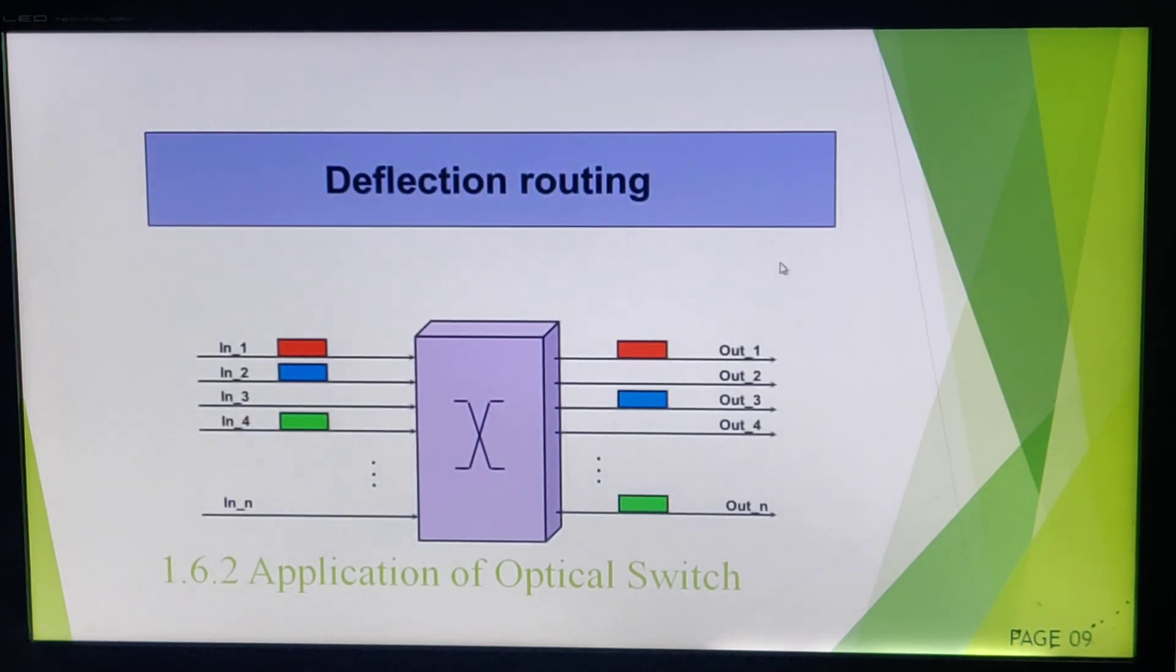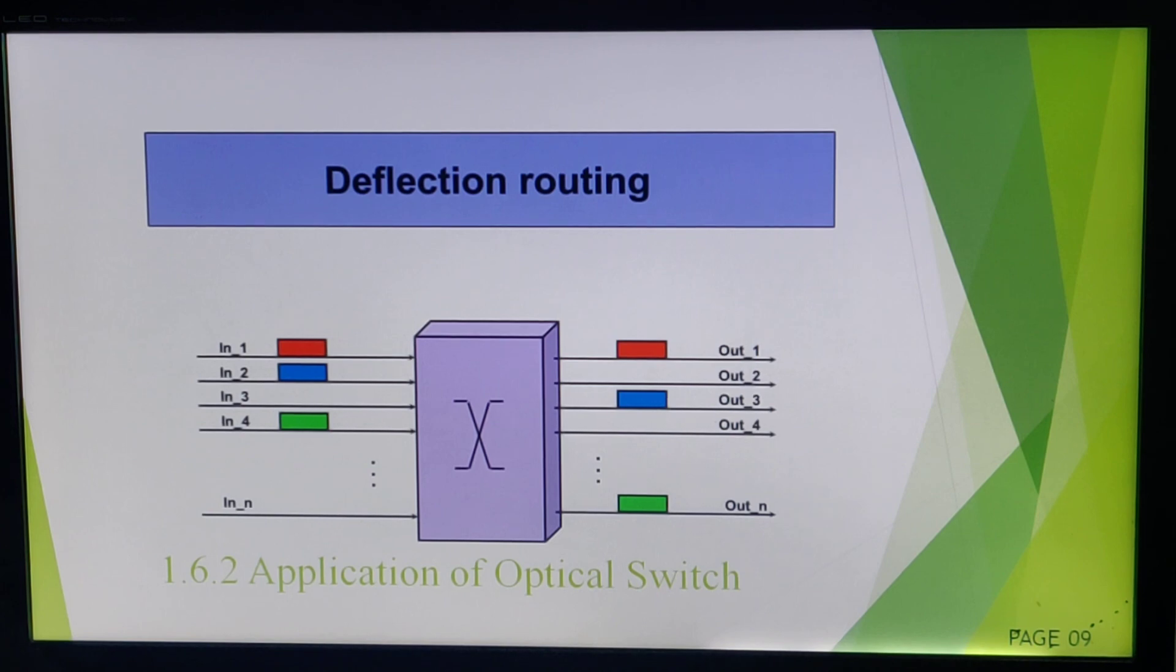This is one more example of application of optical switch: deflection routing. It is not compulsory that my route is fixed—port one input will give you output at port one only. I can receive the output at other ports also. So this is my deflection routing example.